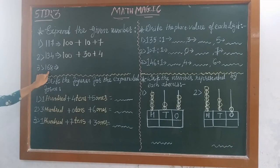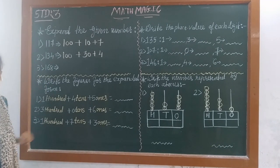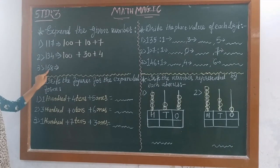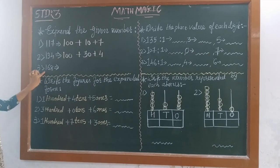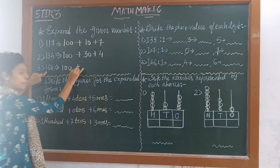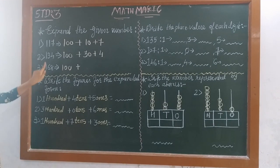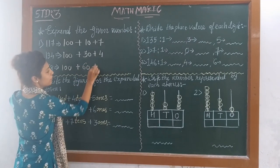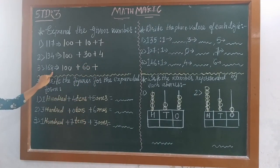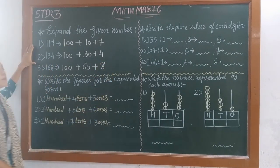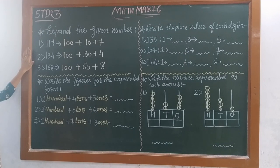Number 3: 168. Once again, 1's place, 10's place, 100's place. 1 is at 100's place, so 1 multiplied by 100 is 100, plus. Then 6 is at 10's place, so 6 tens are 60, plus. 8 is at 1's place, so 8 ones are 8. So these are some examples of expanded form.